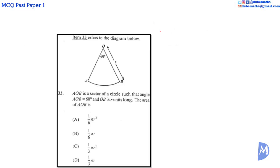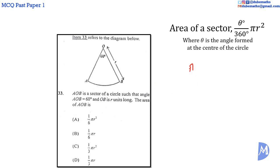Question 33. The area of a sector is theta degrees over 360 degrees multiplied by pi r squared, where theta is the angle formed at the center of the circle. Therefore, the area of this sector is equal to 60 degrees over 360 degrees multiplied by pi r squared. 60 over 360 can be reduced to 1 over 6. So it's 1/6 pi r squared. The answer is A.